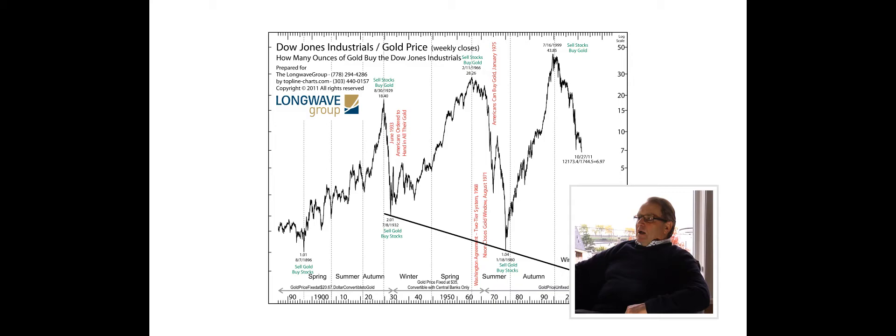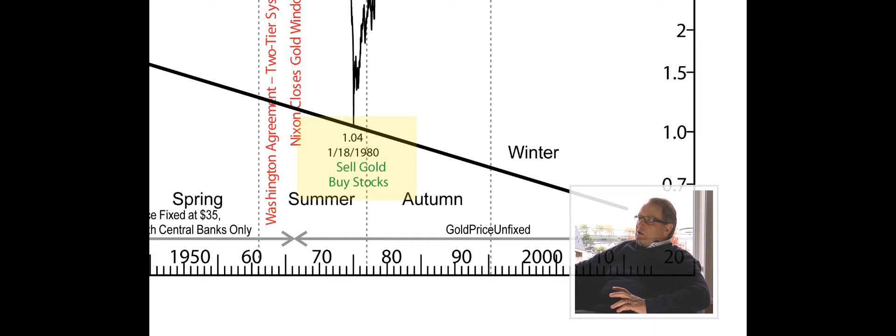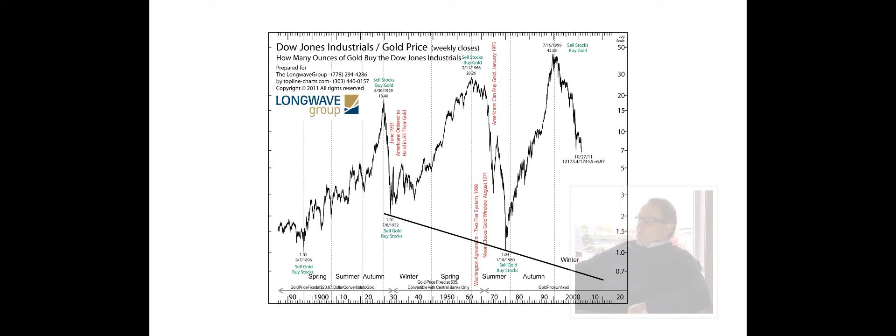Then we want to sell our gold at the end of summer, and we saw it right here in 1980. We want to sell our gold and go back into stocks, the general stock market, because we know that the autumn is a period when stocks, bonds and real estate, and particularly stocks, do exceptionally well in the cycle.